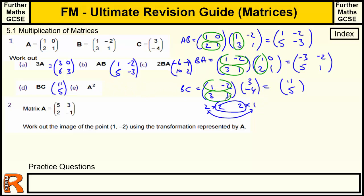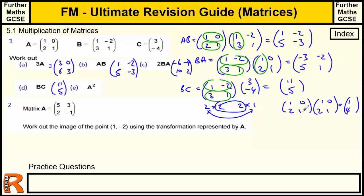A squared is just A times A. So we've got (1, 0; 2, 1) times (1, 0; 2, 1). We don't just square the individual numbers — we actually do the full matrix multiplication. Top-left: 1 times 1 plus 0 times 2 equals 1. Top-right: 1 times 0 plus 0 times 1 equals 0. Bottom-left: 2 times 1 plus 1 times 2 equals 4. Bottom-right: 2 times 0 plus 1 times 1 equals 1. So A squared equals (1, 0; 4, 1).